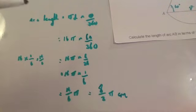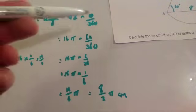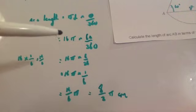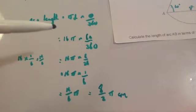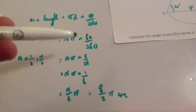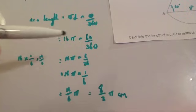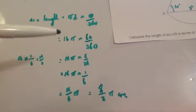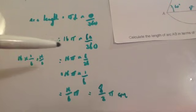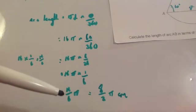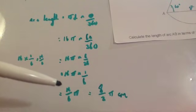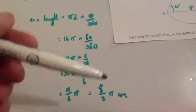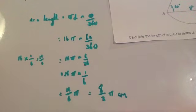For this question, you use the same formula, put in the diameter, work out that the circumference of the whole circle would be 16 pi. It's a sixth of a circle, so you divide 16 pi by 6 to get 16 sixths pi, then cancel that down to 8 thirds pi. And that's it.